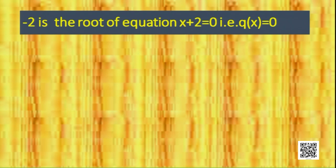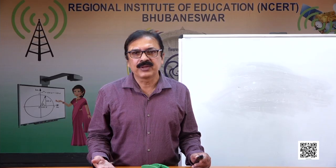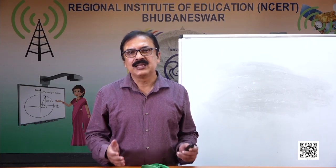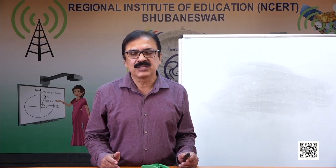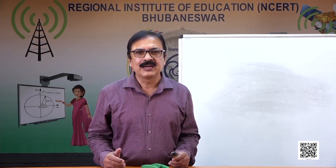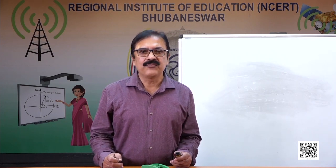So, from these two examples we conclude: the zero of a polynomial P(x) is the root of the equation P(x) = 0. To find the zero of a given polynomial, we solve the equation P(x) = 0, and whatever value of x we get is the zero of that polynomial.